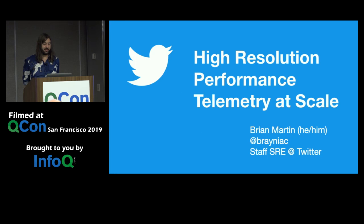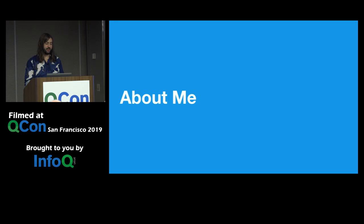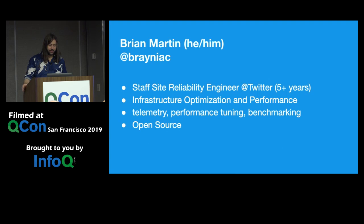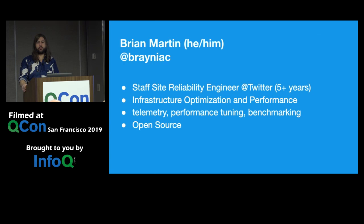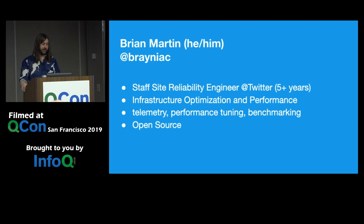A little bit about me. I'm Brian. I work at Twitter as a staff site reliability engineer. I've been at Twitter for over five years. I work on a team called IOP, which is Infrastructure Optimization and Performance. My background is in telemetry, performance tuning, and benchmarking. I really like nerding out about making things go faster. I'm also heavily involved in our open source program at Twitter and have two open source projects currently.